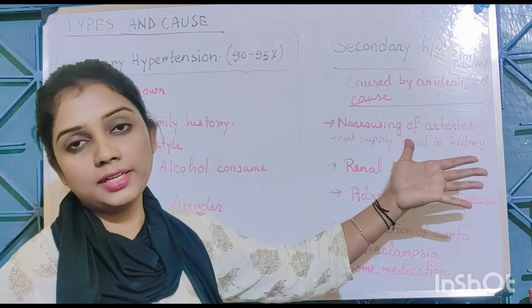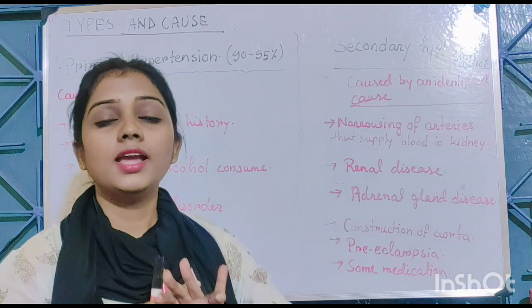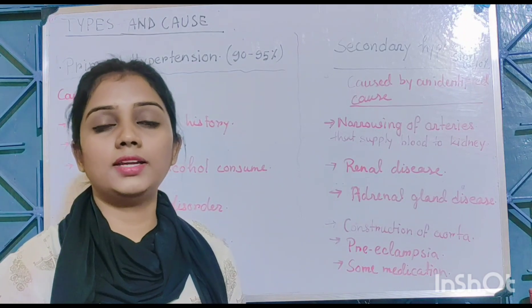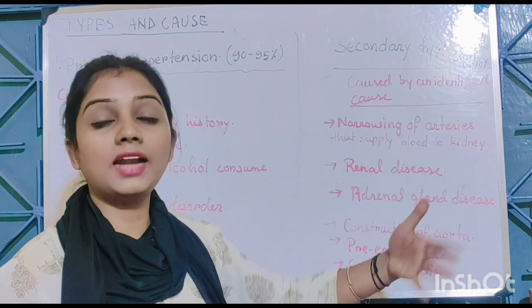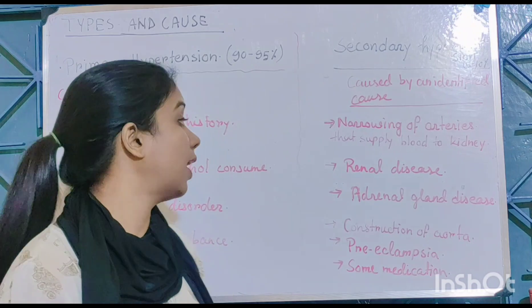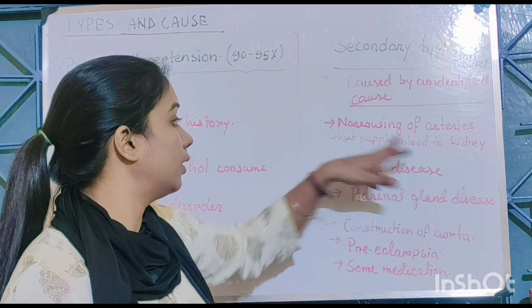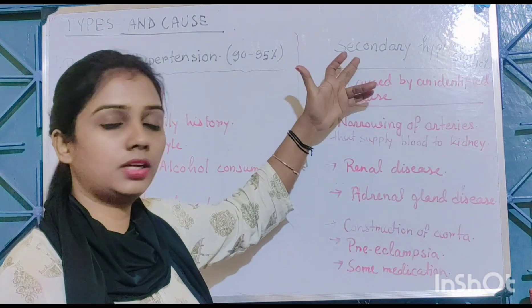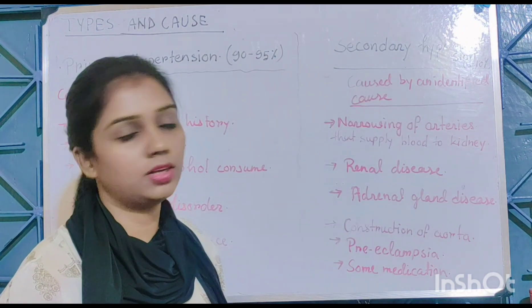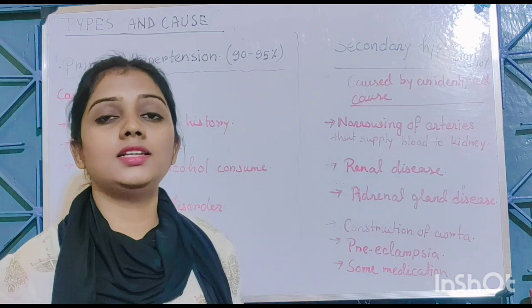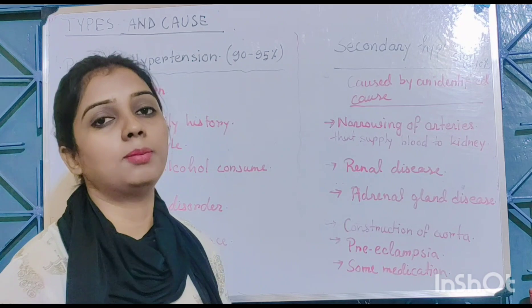Secondary hypertension causes include narrowing of the arteries that supply blood to the kidney. Since blood is purified in the kidney, a blocked blood supply to the kidney creates high blood pressure, which is a cause of secondary hypertension. Renal disease is another cause of secondary hypertension.